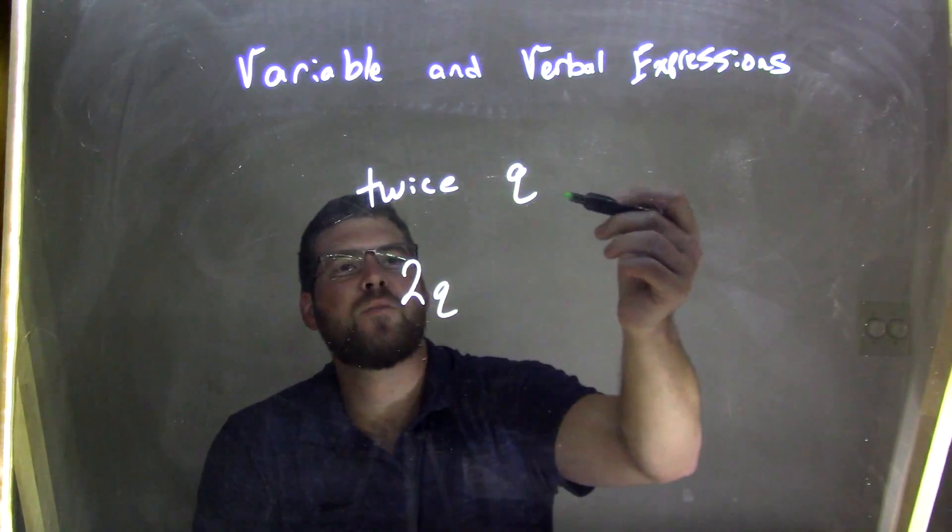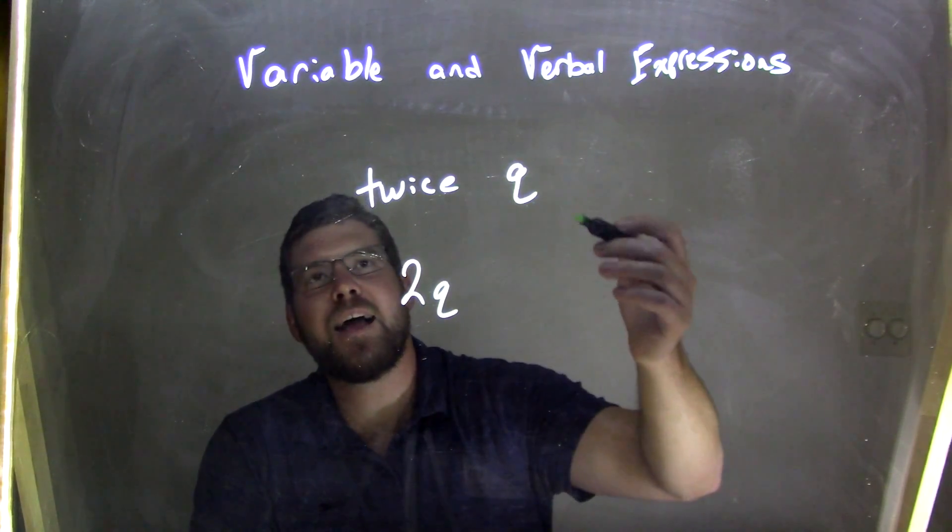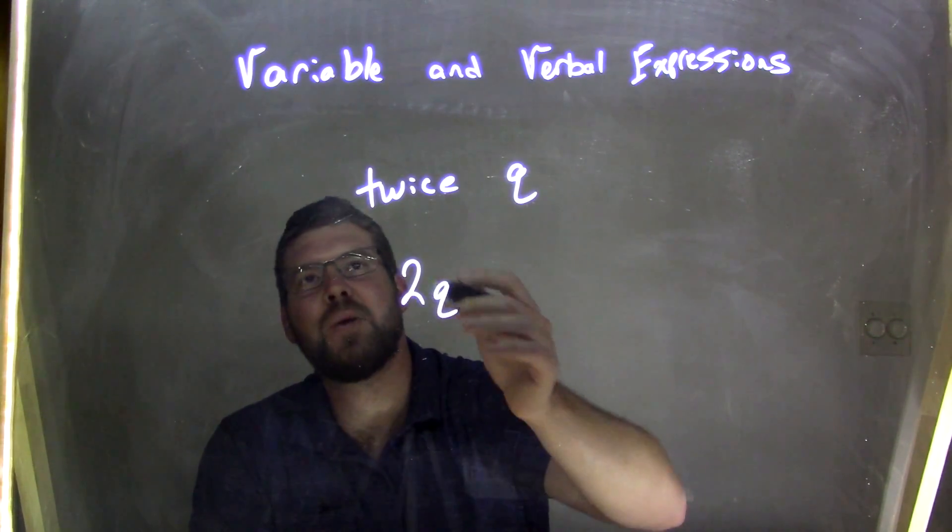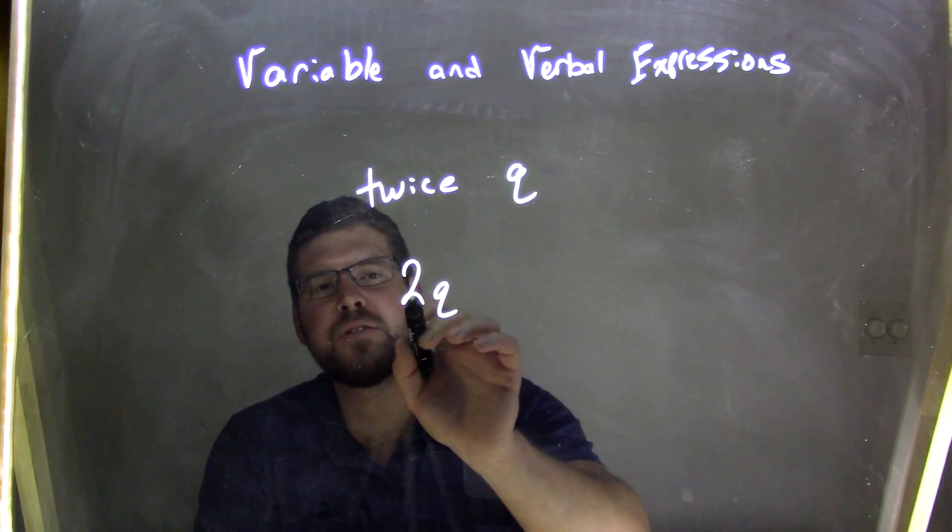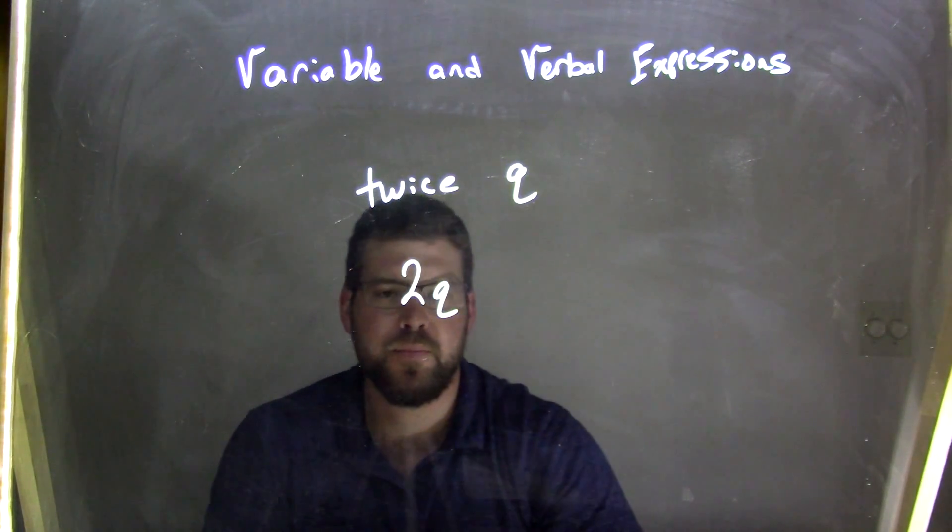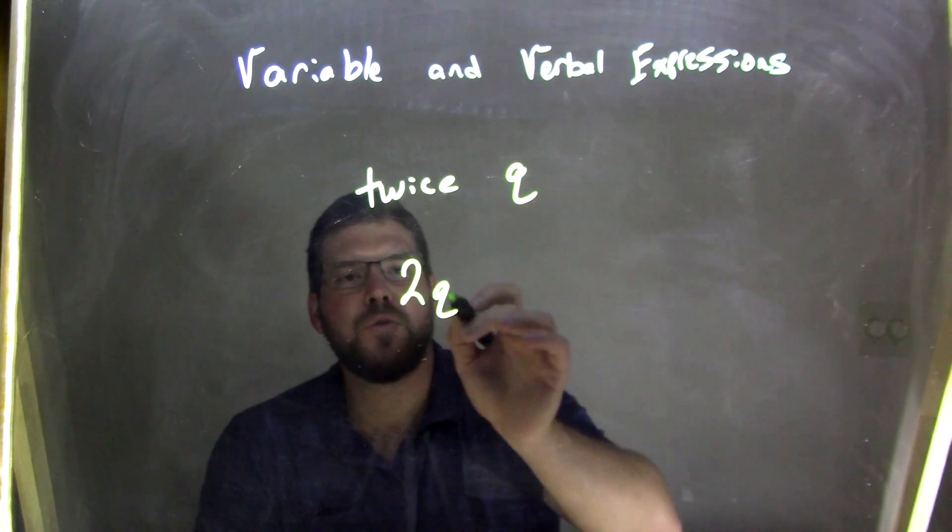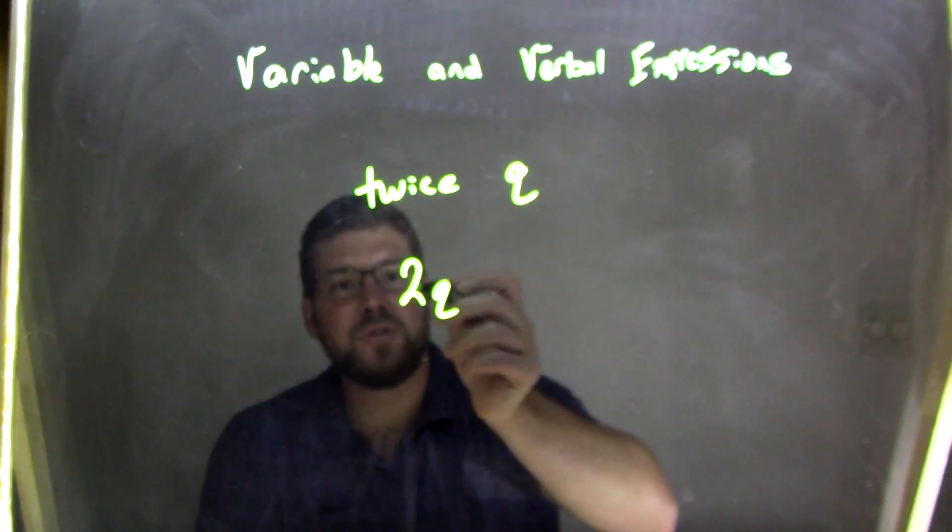So that's our verbal expression, twice Q, and I can translate it into a variable expression of just the number 2Q. So twice Q, 2Q. Think twice to be the number 2.